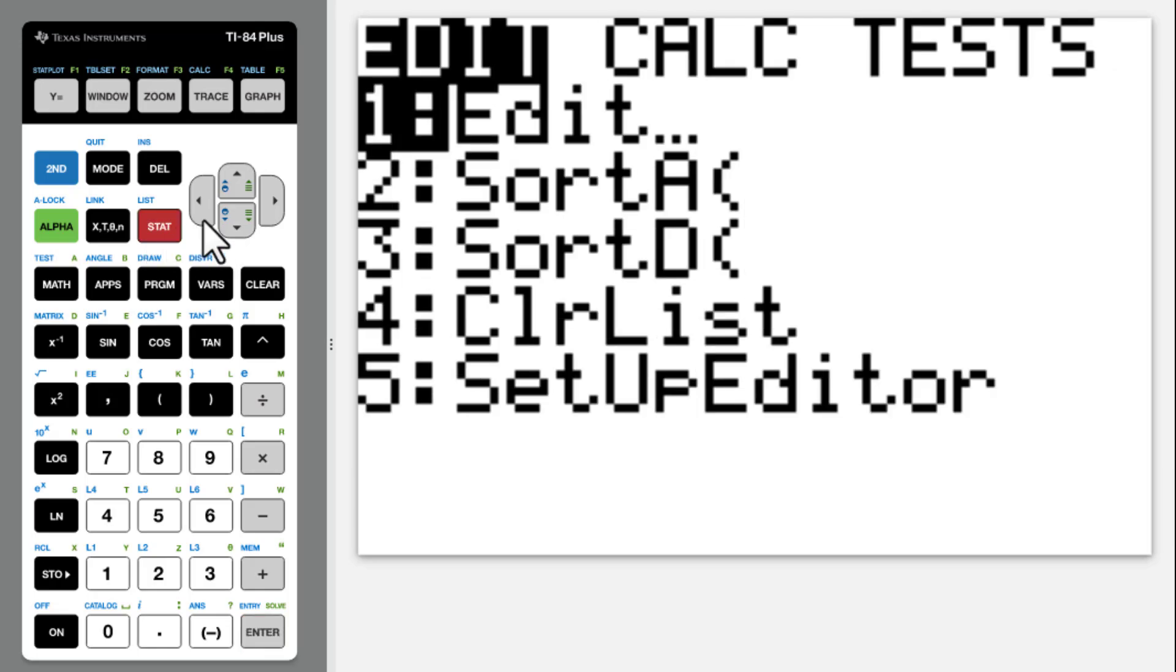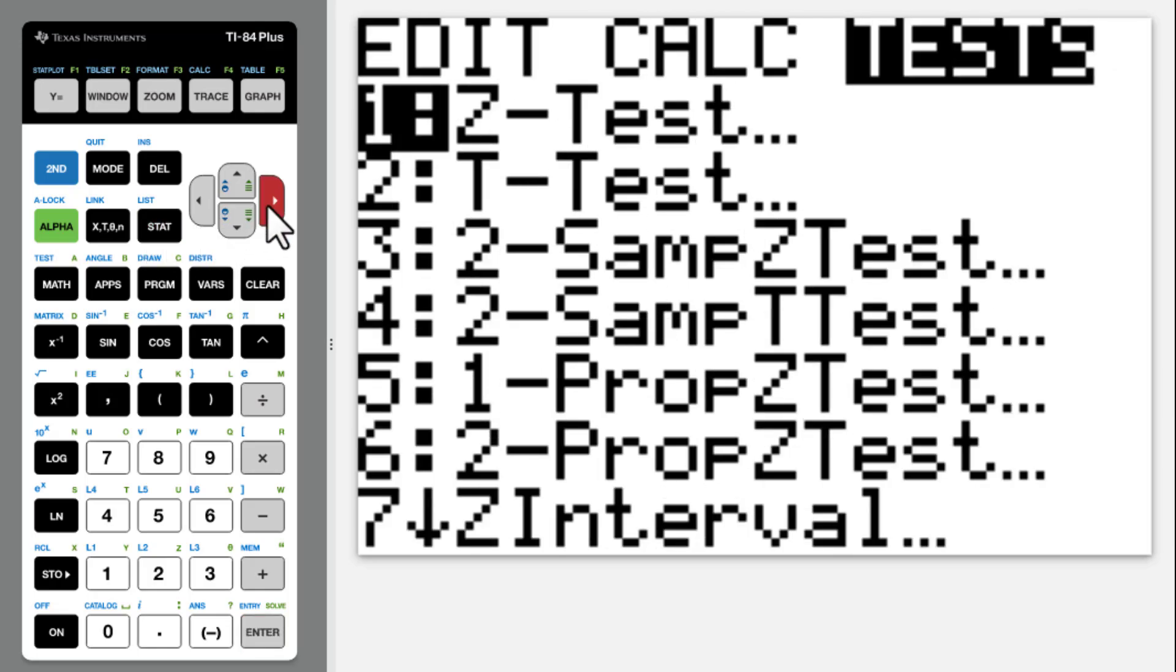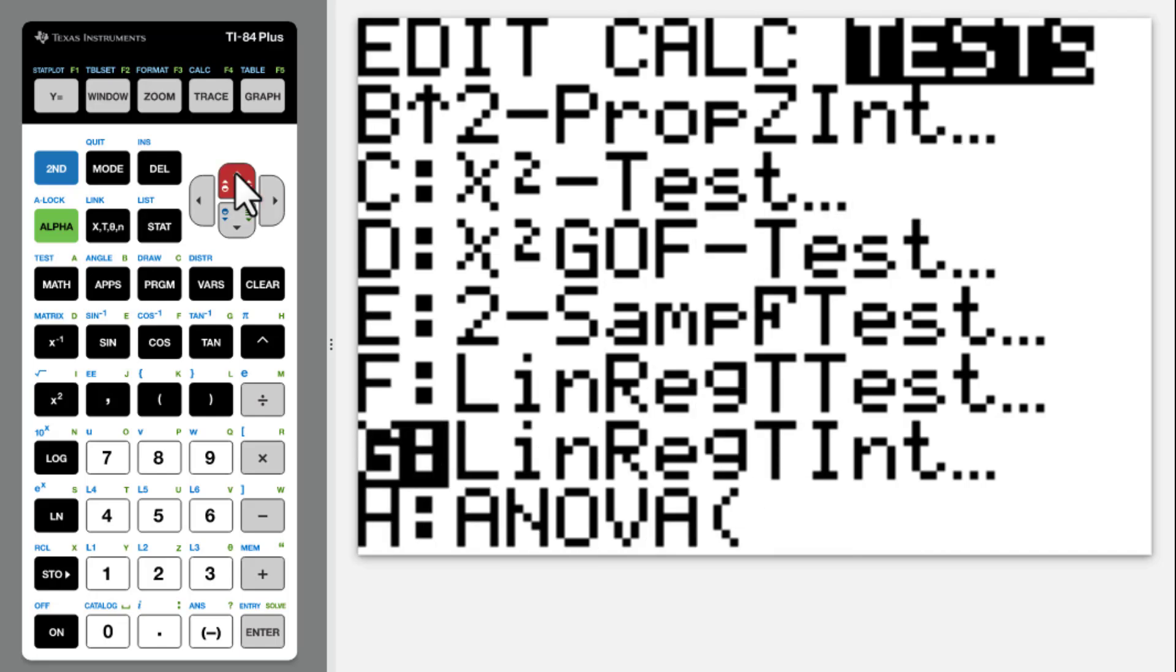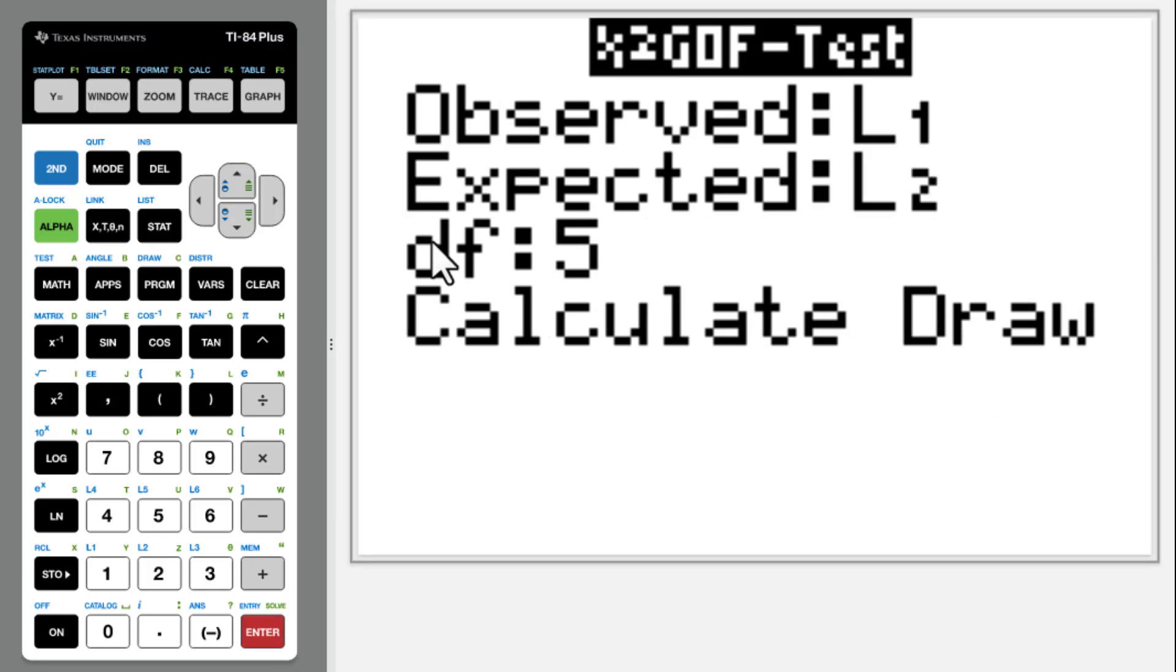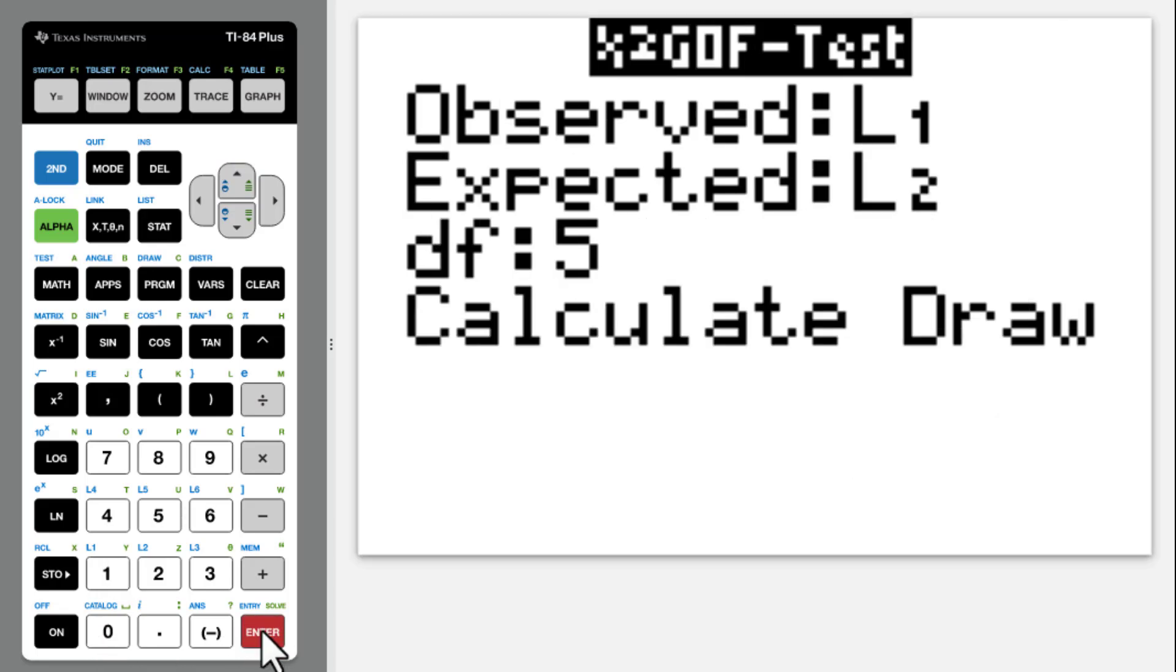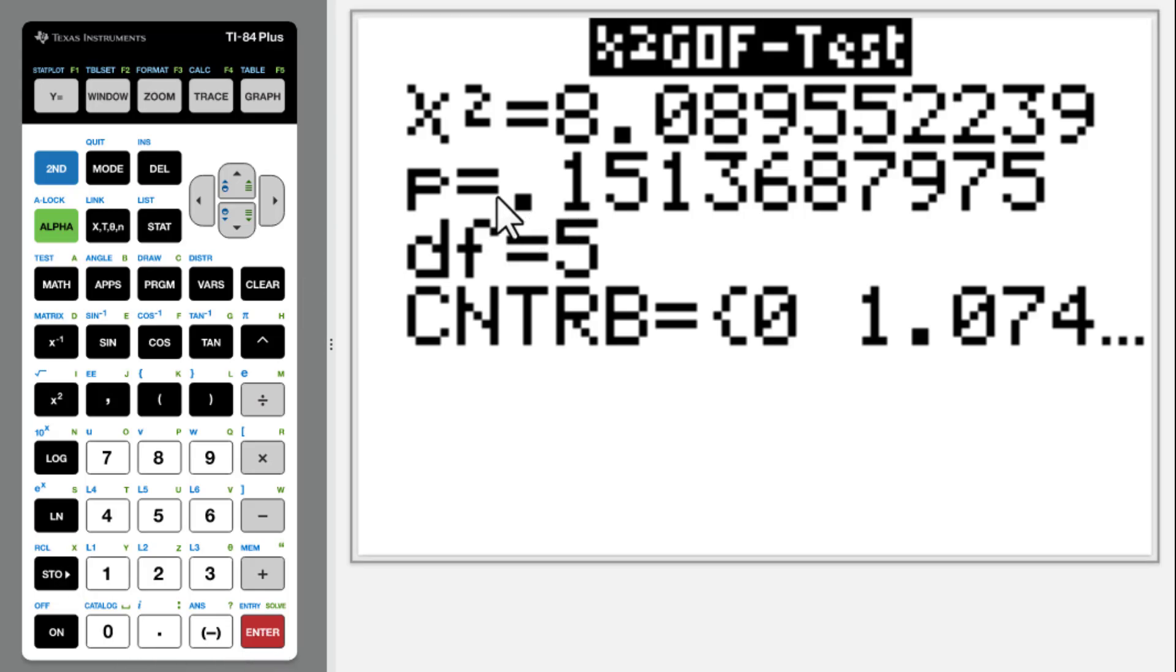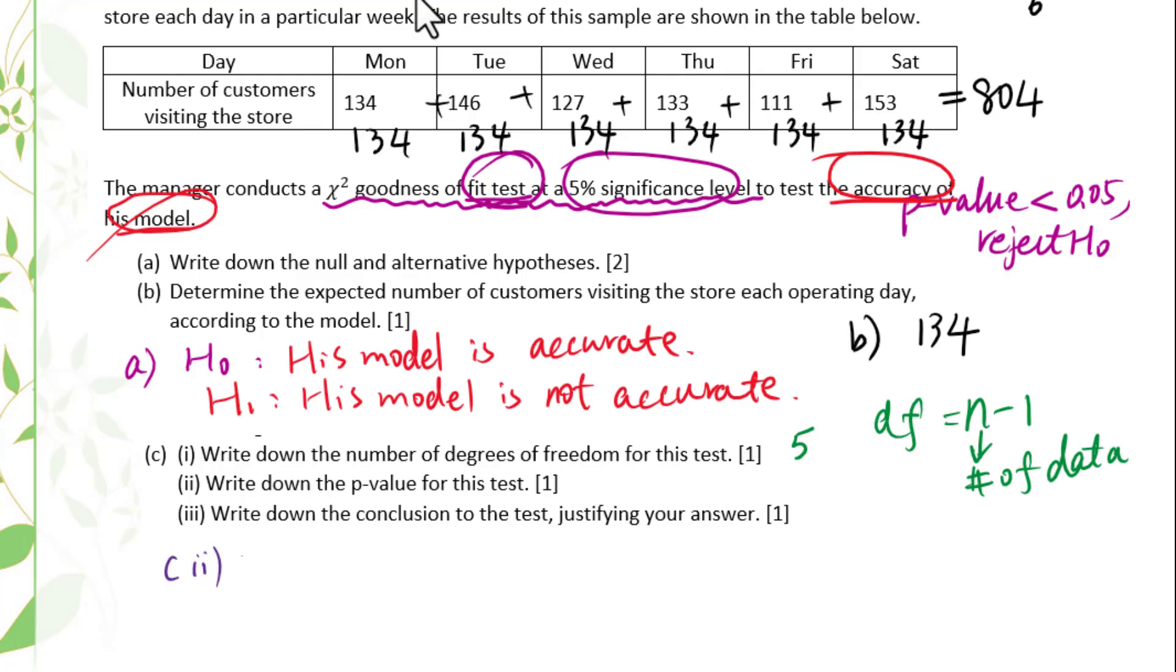Then go back to STAT tests. Go to chi-squared GOF test. Our degree of freedom is 5. We got p-value equals 0.151. For part c2, p-value equals 0.151.